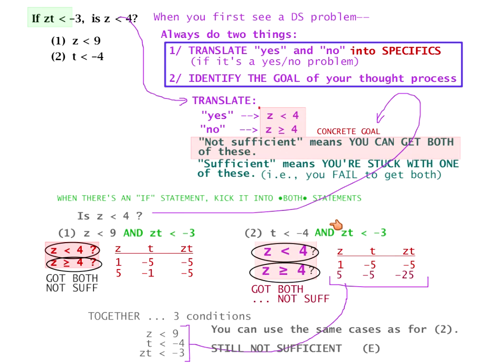Notice that even once we had all this laid out explicitly on the page, there were still people trying to make z·t not less than −3. That's not the goal. The goal is to get both cases for z, and you should write that as prominently as needed on your page so you don't forget. That tends to be the core issue with data sufficiency, and especially with yes/no data sufficiency.